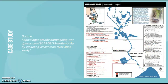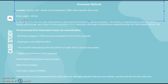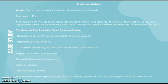The location is Florida, USA, north of the Everglades — 5,000 square miles in area, 5 kilometers wide, with a river length of 145 kilometers. In the 1960s, the river was channelized to help drain floodwaters for flood protection. The effects of channelization led to the river drying up and a two-thirds decrease in egret and heron populations, large-mouth bass populations also fell, and bald eagles fell by 70%. So this channelization had a lot of negative consequences on the ecosystem.